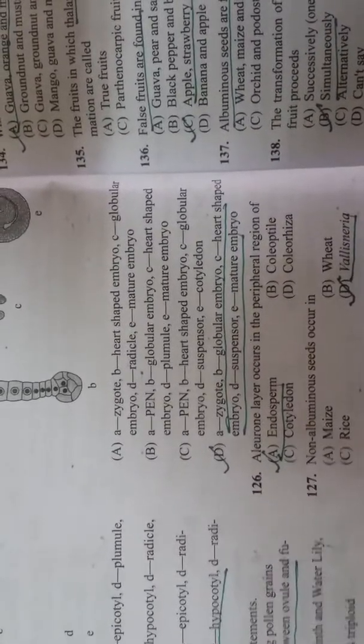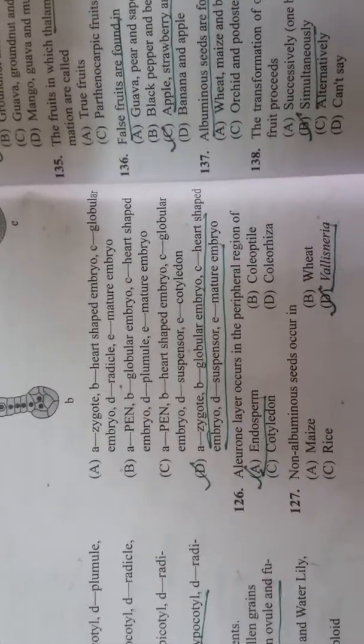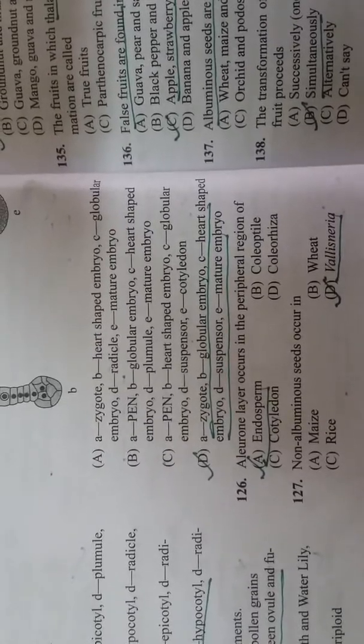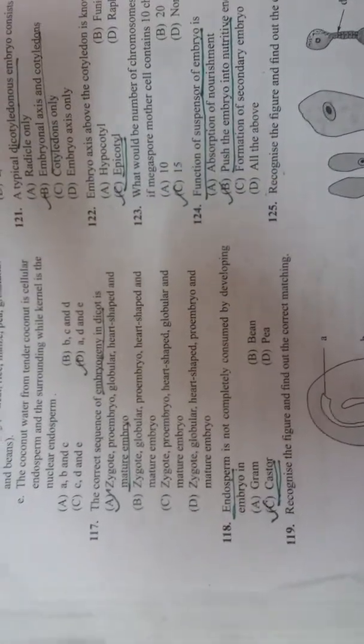Aleurone layer occurs in the peripheral region of endosperm. Non-albuminous seeds occur in Vallisneria. Thank you my child to watch my program. Please share, subscribe and all.